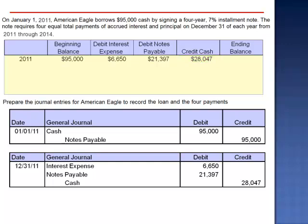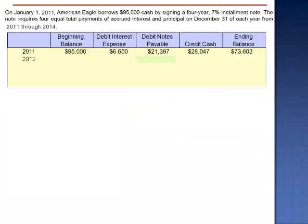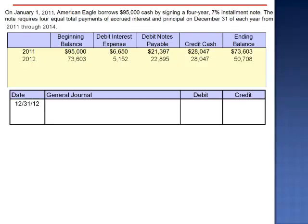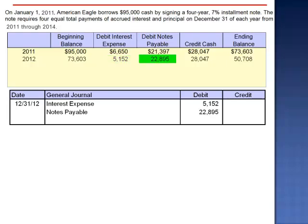The ending liability at 2011 is $73,603 — $95,000 minus $21,397. For 2012, the beginning loan balance is $73,603. 7% of $73,603 is $5,152. The credit to cash, $28,047, indicates that the reduction in principal, the debit to notes payable, is $22,895. This drops the ending balance to $50,708 at the end of 2012. The journal entry is a debit to interest expense $5,152, debit notes payable $22,895, and credit cash $28,047.